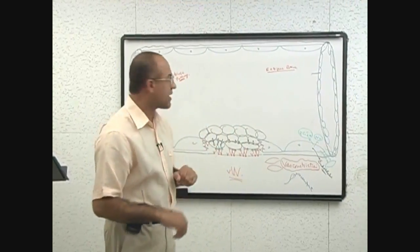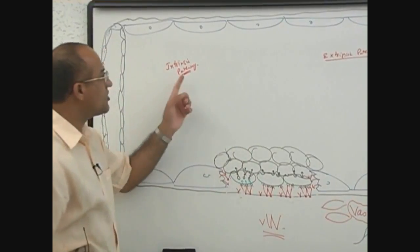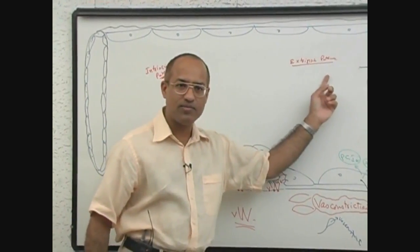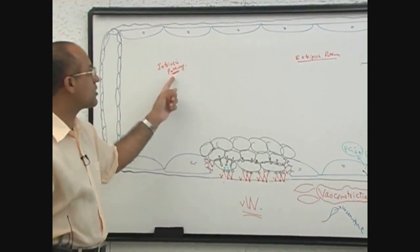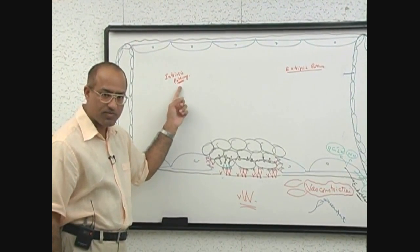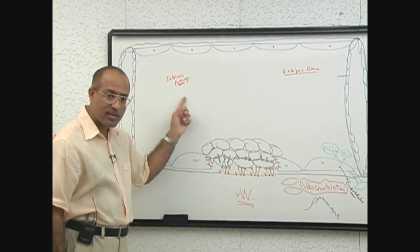Now let's come back. When injury is here, listen carefully. When injury is here, intrinsic pathway is activated as well as extrinsic pathway is activated. Why intrinsic pathway is activated? Because when blood comes in touch with the injured endothelial cell or blood comes in touch with subendothelial...